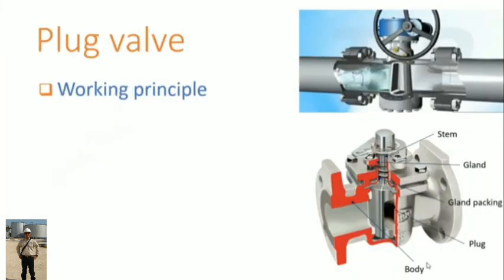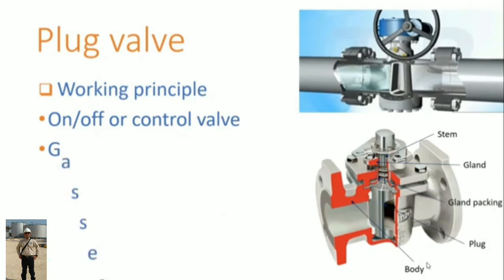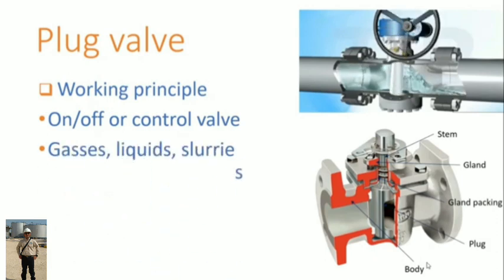Plug valve working principle. It has a plug connected to a rotating stem. It can be used as on-off and control valve while handling gases, liquids, and also slurries.